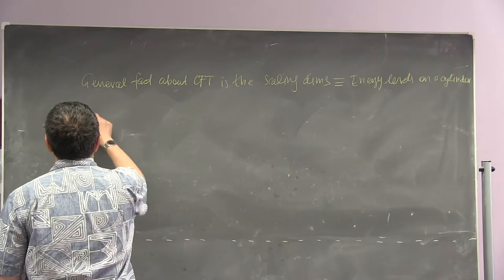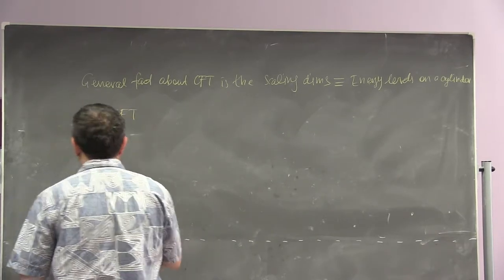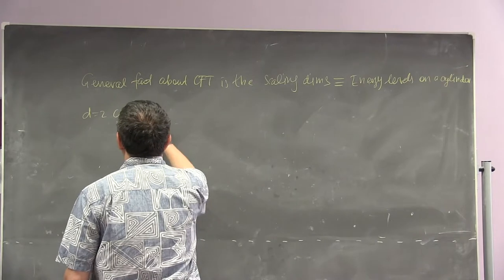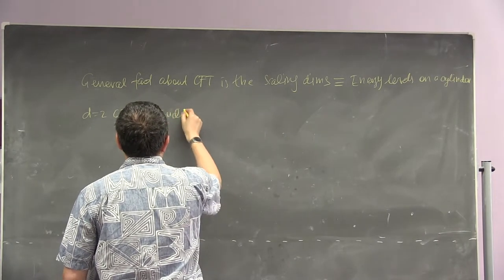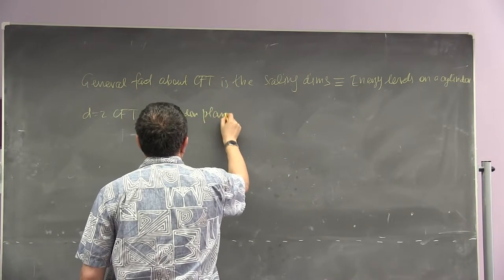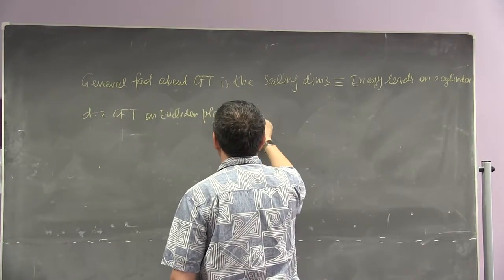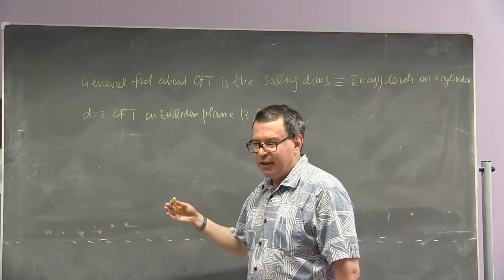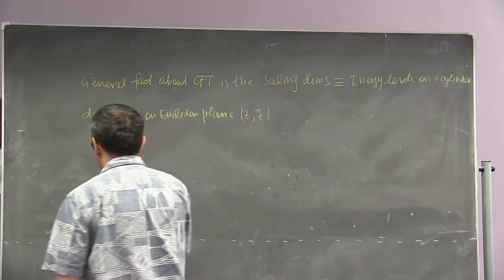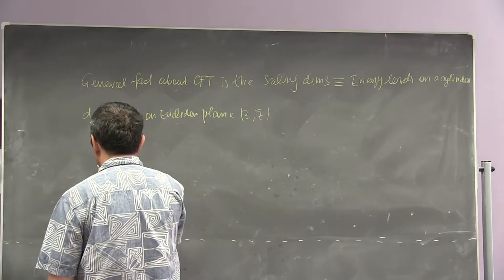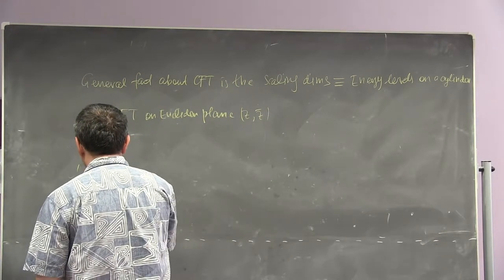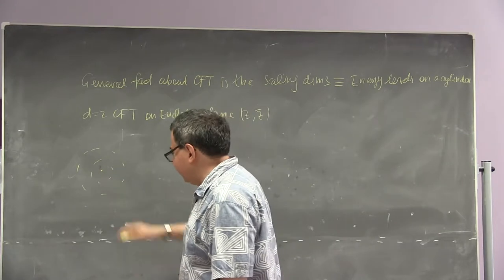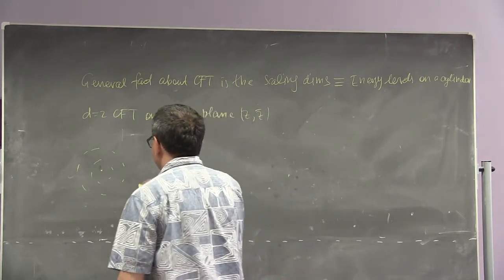Let's consider a d equals 2 conformal field theory and work on the Euclidean plane, using complex coordinates z and z-bar. People usually talk about radial ordering, or radial quantization — when you have the origin around which the vacuum is defined, and instead of time ordering, you order operators according to how far from the origin they are.